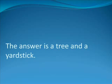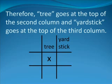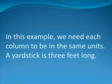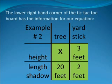Next, ask yourself what two objects are being compared. The answer is a tree and a yardstick. In the last line of the problem, we were asked to find out how tall the tree is. Therefore, tree goes at the top of the second column and yardstick goes at the top of the third column. The characteristics being compared are the height of the objects and the lengths of their shadows. Thus, we fill in the box as follows. In this example, we need each column to be in the same units. A yardstick is 3 feet long, by definition. Now we can fill in the blanks.